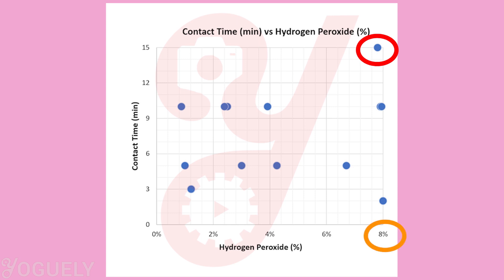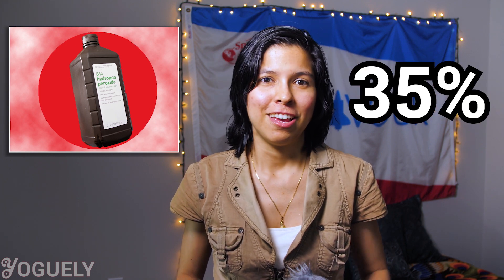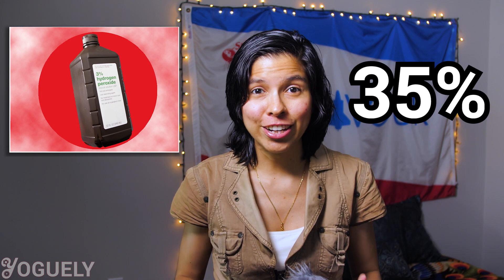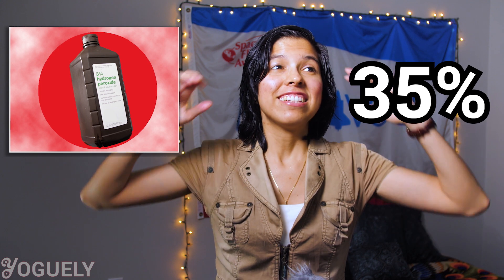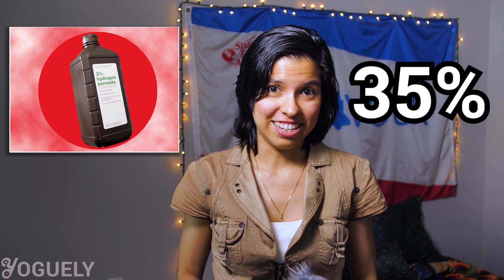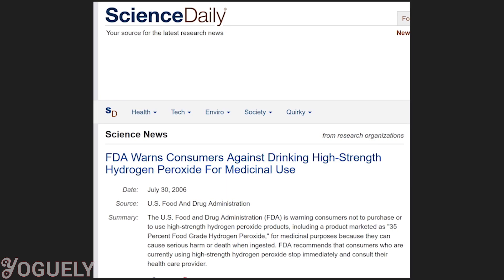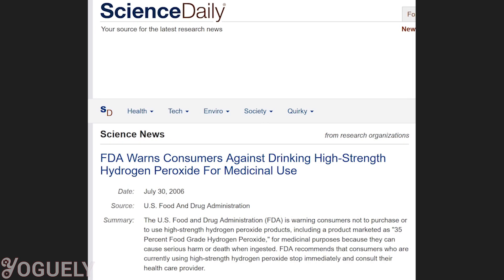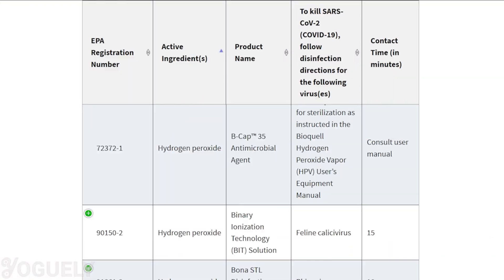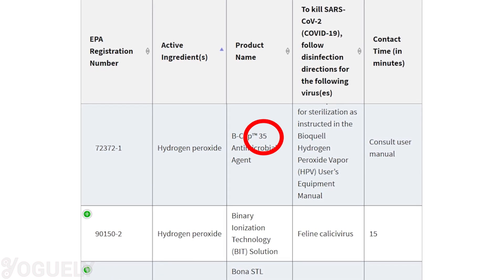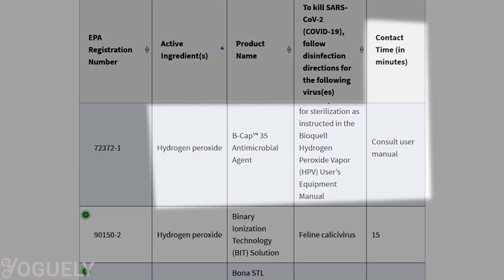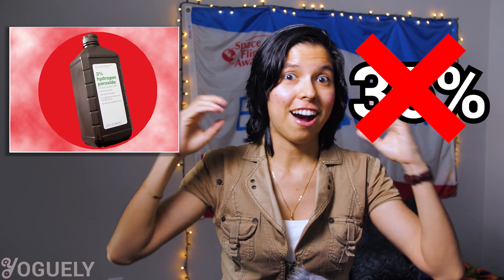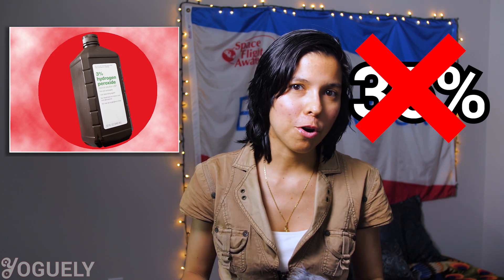There are products containing 35% concentration of hydrogen peroxide, which are extremely dangerous to handle at home — they are toxic pesticides to life and the environment. It is so harmful if accidentally ingested that in 2006 the FDA tried to warn consumers not to purchase high-strength 35% hydrogen peroxide for medicinal use. The EPA's website doesn't even list a contact time for products with 35% hydrogen peroxide — it just says to consult the user manual. In a household setting, you will probably never need such a high concentration since it may bring more harm than good.